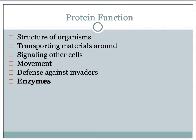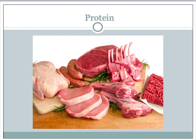So what do we need protein for? It is the structure of organisms. It transports materials around our bodies and cells. It signals other cells, helps us with movement, provides our defense against invaders, and we need it for enzymes. Here is some very raw protein — chicken, meat, beans — all of these things contain protein. They're very important to our health and we have to have them, otherwise those functions won't happen.